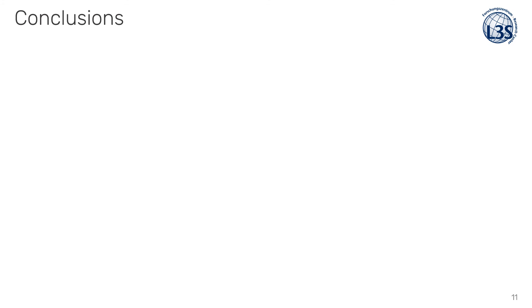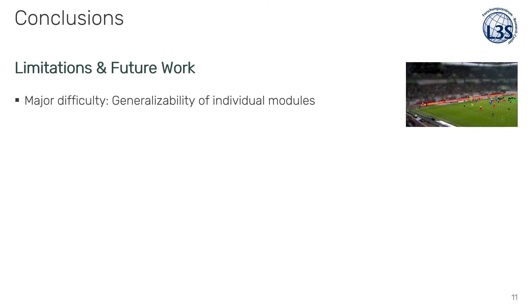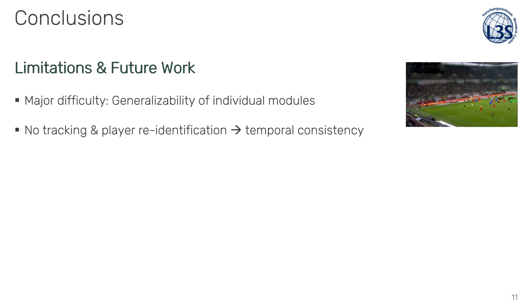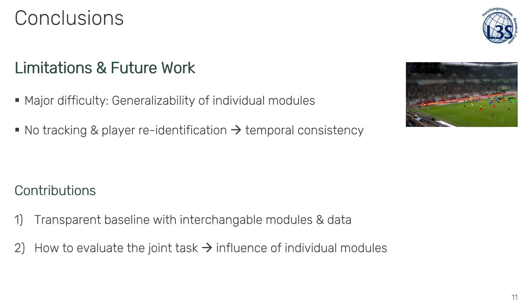We have observed that the major difficulty for player position estimation is the generalizability of individual modules. Furthermore, we explicitly did not consider temporal consistency like player tracking. However, to extract position data for individual players, we need player identification and re-identification. Nevertheless, we have presented the first transparent baseline and how to evaluate the joint task.